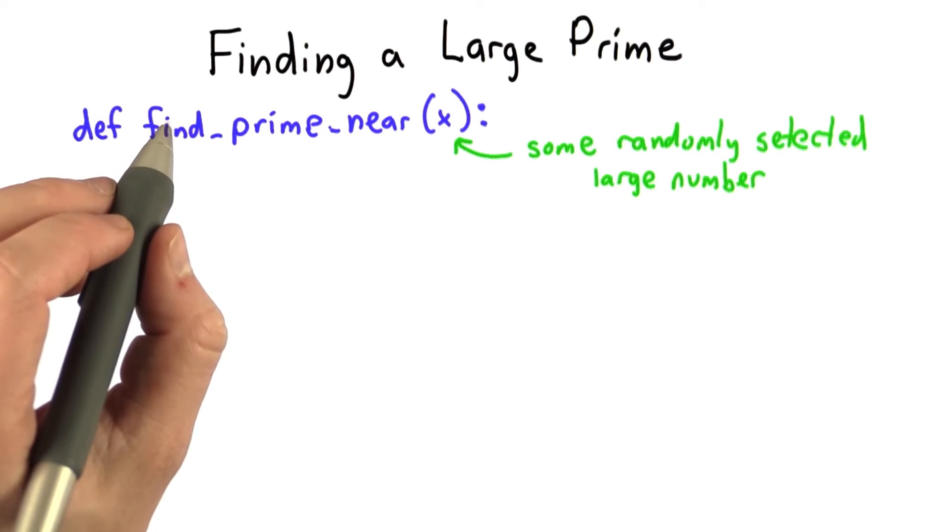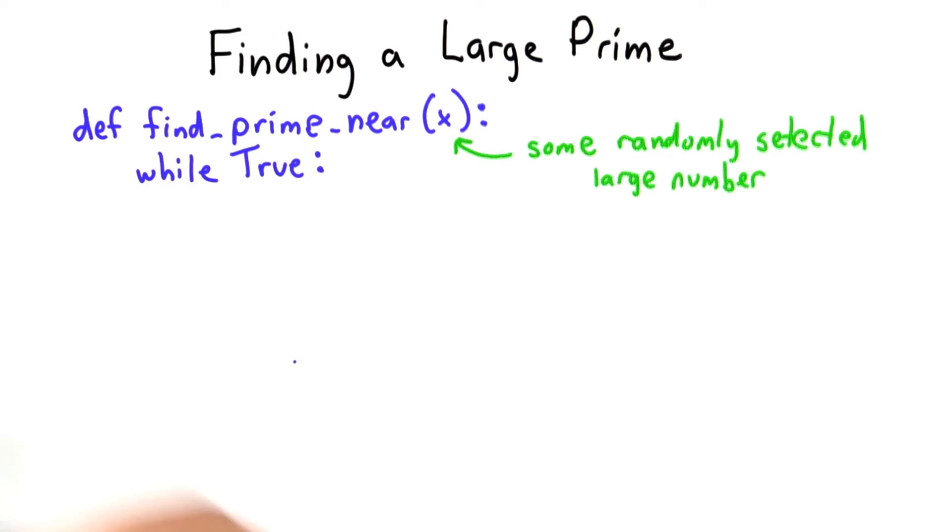So that suggests a strategy for finding a large prime, which is to keep trying guesses until we find one that's prime. If it's not a prime, then we add 1 and we try again.